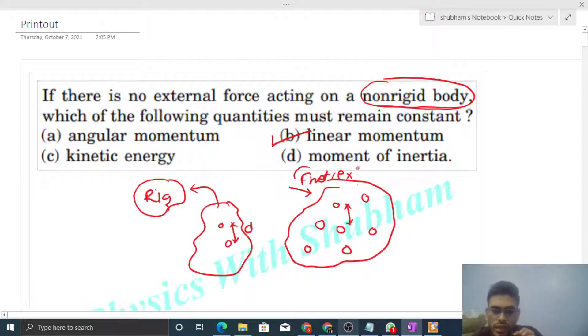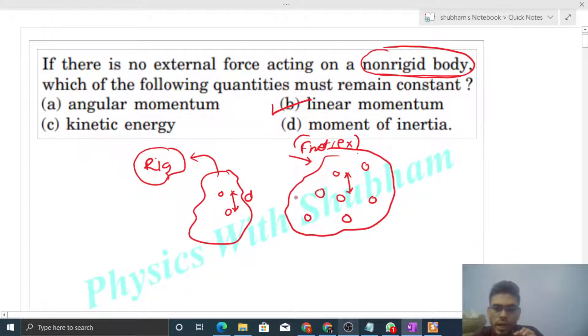It follows that if net force is zero, then linear momentum will be constant. If net force is zero, then net torque will also be zero, because the torque of net force is your net torque. If net torque is zero, then angular momentum also cannot change - that is conservation of angular momentum. So option A is also correct.